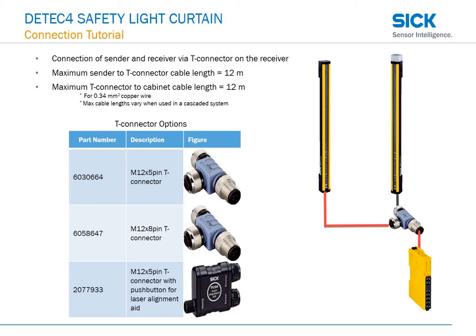In the third scenario, it'll be just the opposite — connection of sender and receiver via T-connector on the receiver side. In this scenario, the maximum cable length for both cables will be 12 meters.